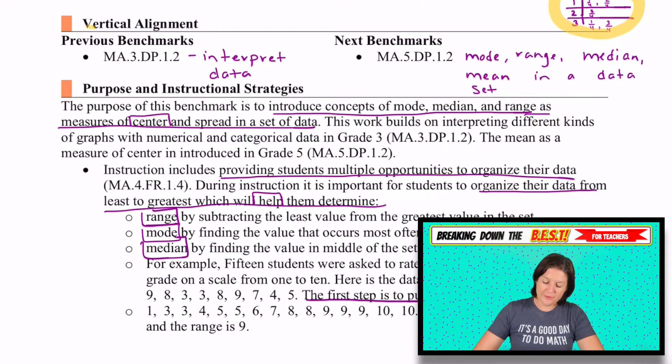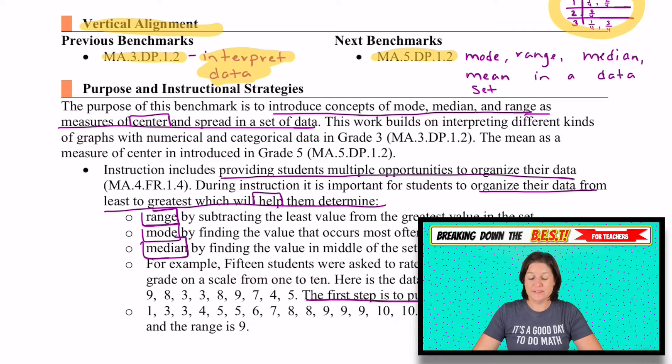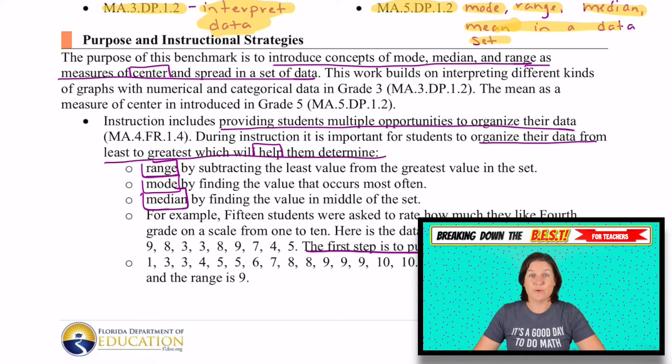Where are they coming from in third grade? Some vertical alignment. We have 3.DP.1.2, which was the interpreting data. And then in fifth grade, we have 5.DP.1.2, which is the mode, which we have this year. The range, which we have this year. The median, but we can have odd and even data sets. And the mean, which is new, that's finding the average. So just know that they will be using all of this that you're teaching this year to help them in fifth grade.